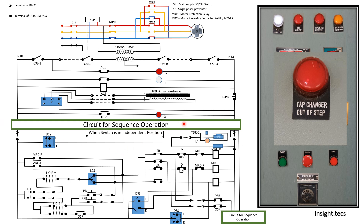This green box indicates the circuit for sequence operation. Whenever there are multiple transformers in a substation — say two or three transformers — the sequence of operation for tap changing is set so that whenever the master is operated, the followers will also change their tap position subsequently. Or whenever they are put into independent position, they will change independently. We will learn the circuit for sequence operation in another video; for now we will just take the output from this and learn how the further control circuit operates.